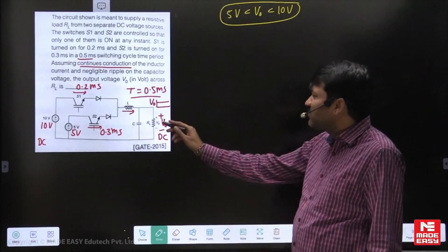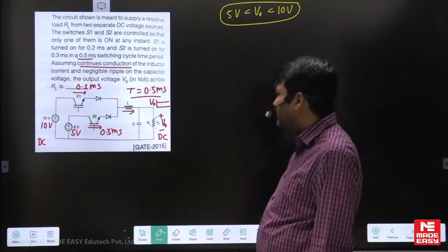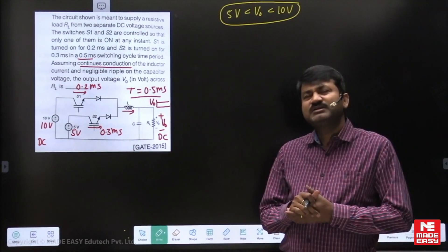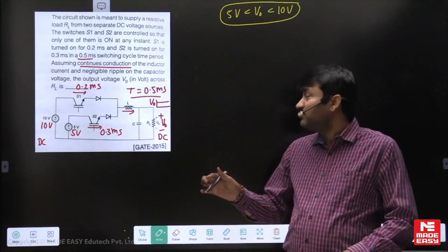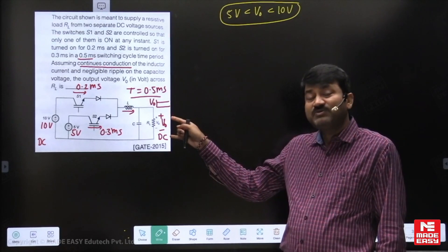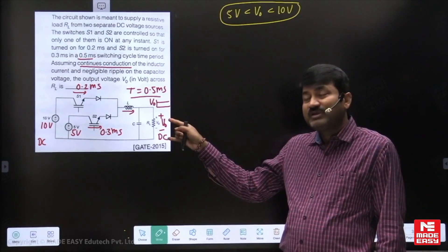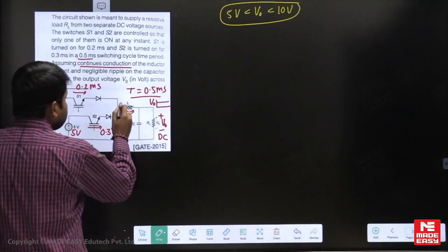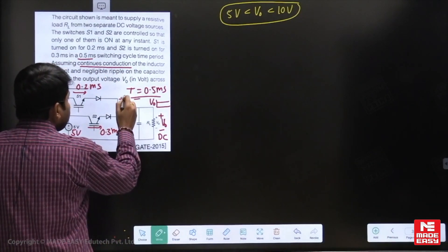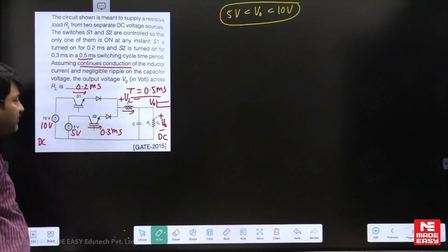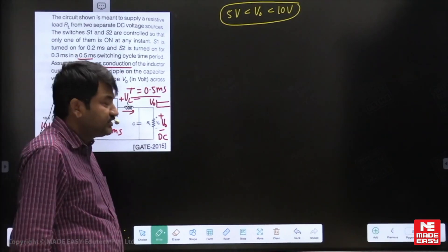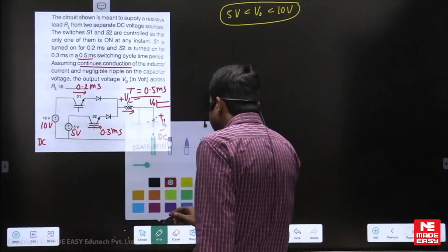Of course, inductive current is always continuous here. In any numerical involving DC-to-DC converters, if you want to find the expression for average voltage, try to draw the waveform for VL — the voltage across the inductor — and make VL average equal to 0 after reaching steady state. Let us try this approach.